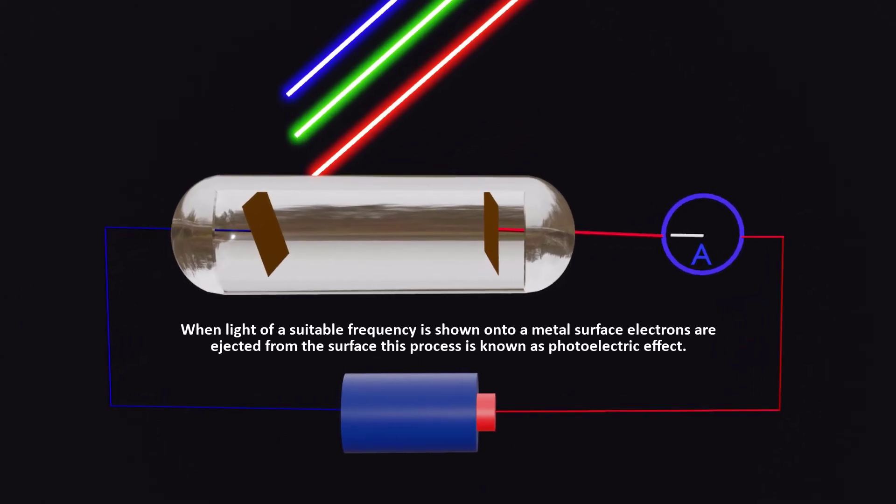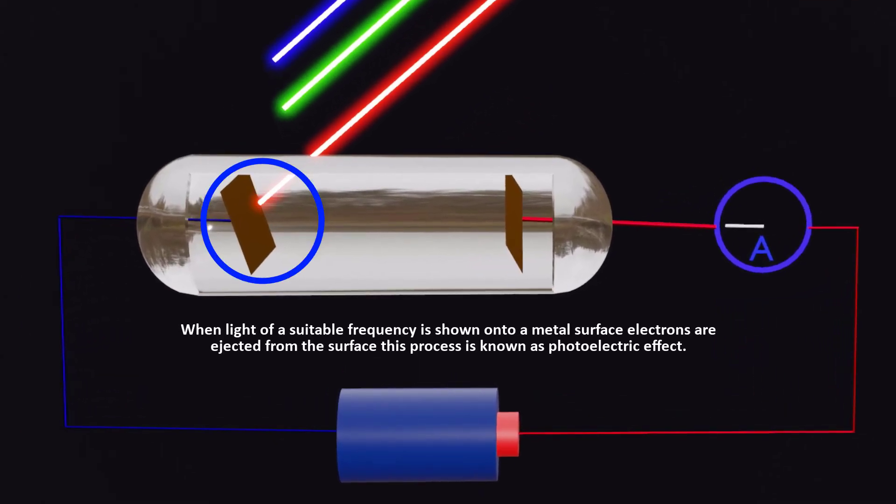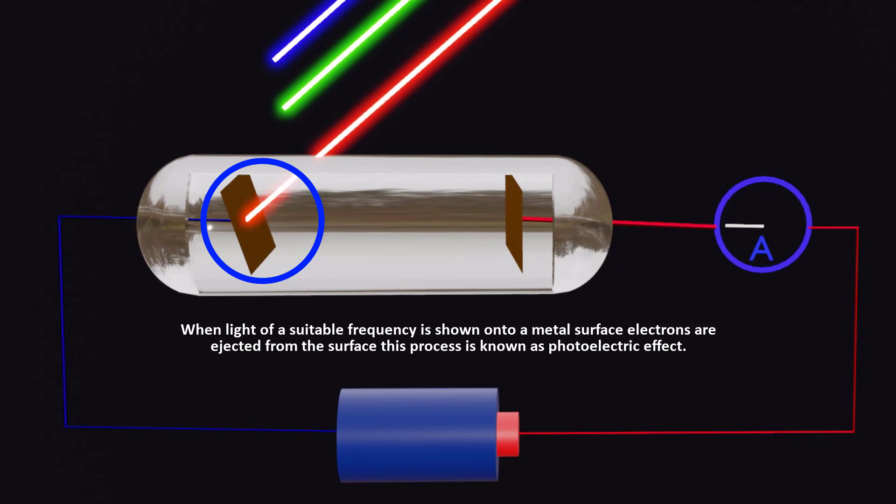The photoelectric effect occurs when light of a suitable frequency, or energy, is shone onto a metal surface. When this happens, electrons are ejected from the surface. These ejected electrons are called photoelectrons.